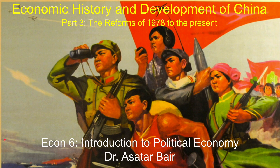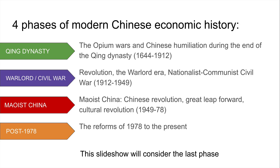Hey, it's Dr. Rastarab with part three of my series on the economic history and development of China. There are four phases of modern Chinese economic history: the imperial period, the Qing dynasty, the warlord and civil war period, and the Maoist period. My previous slideshows examined those, so this one's going to focus on the reforms of 1978 to the present.